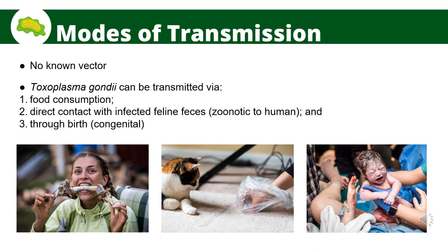Another way is through eating food previously contaminated by knives, utensils, cutting boards, or other foods that had contact with raw contaminated meat or shellfish. Another way of getting infected is through contact with cat feces, most especially for owners of infected cats. Cats are not natural carriers of this parasite but can get infected by ingesting infected intermediate hosts such as rodents and birds. The only person-to-person transmission is through mother-to-child birth. A woman newly infected with Toxoplasma during or just before pregnancy can pass the infection to her unborn child, known as congenital infection.